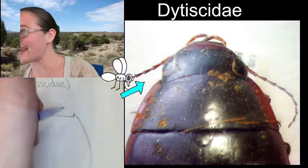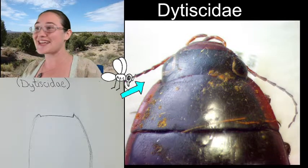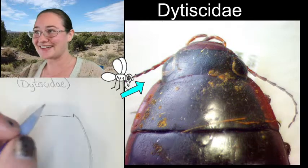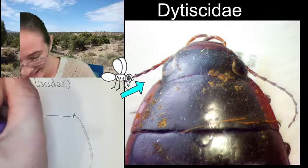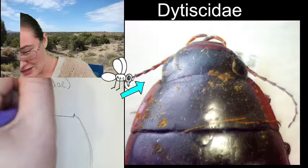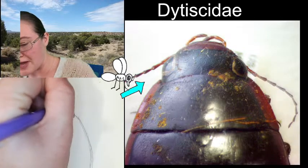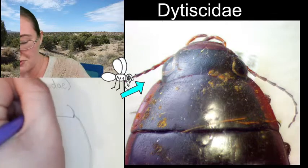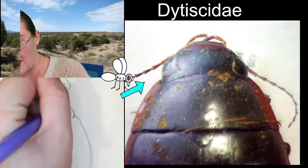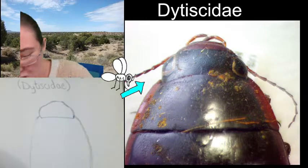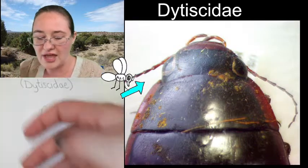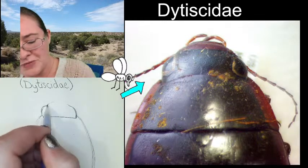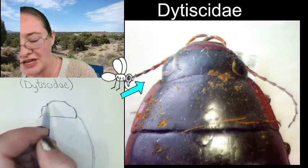Thank you for slowing me down so everyone can sketch at their own pace. Getting the head started — I want to give myself a little space for those compound eyes, and there's a slight protuberance; it protrudes a little bit away from the shape when you get up into the head area. That's going to be the clypeus, the section of the head that leads up to the mouth.